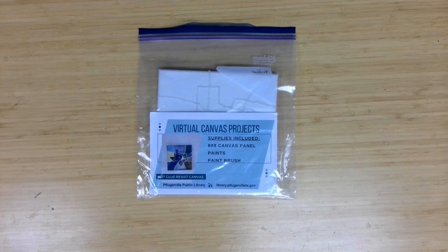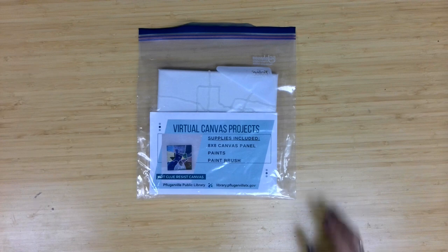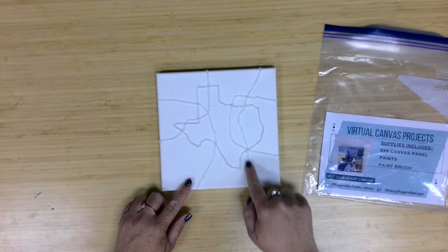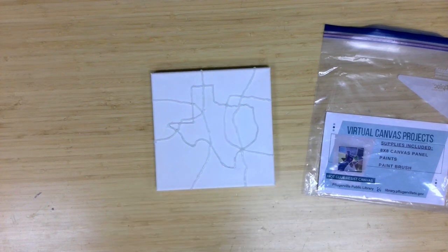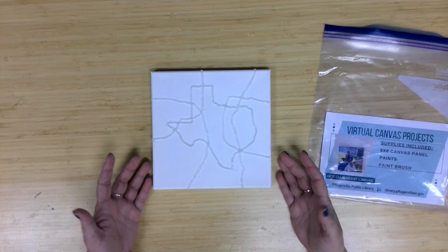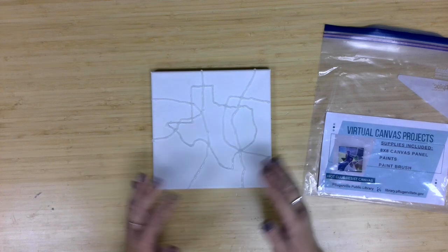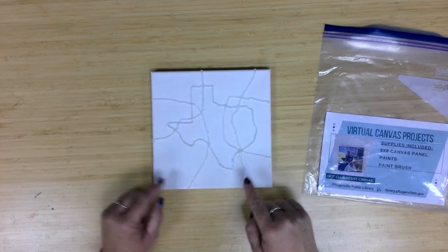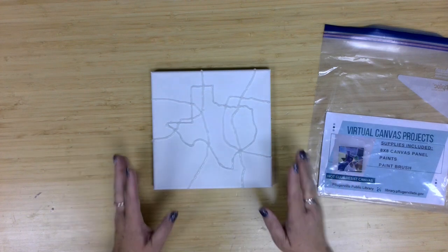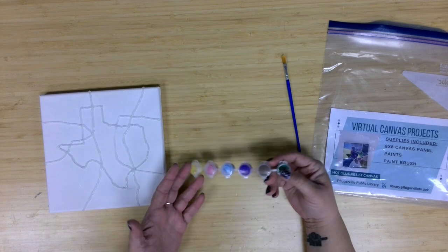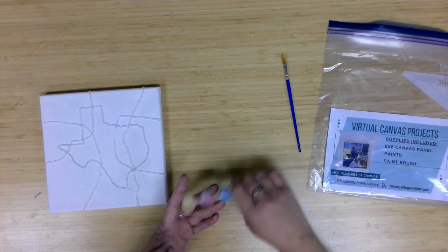This month's project is a hot glue resist canvas. Let's start with a look at the supplies being provided. In our bags this month we have our 8x8 canvas with the hot glue already applied, since I didn't want to rely on folks at home having hot glue. I went with a very straightforward basic Texas shape and added different lines. Also, we're providing a paint brush and a strip of paint pods with some paints in them.